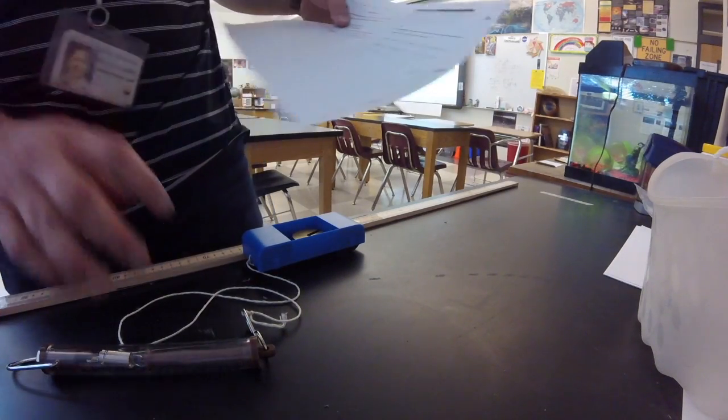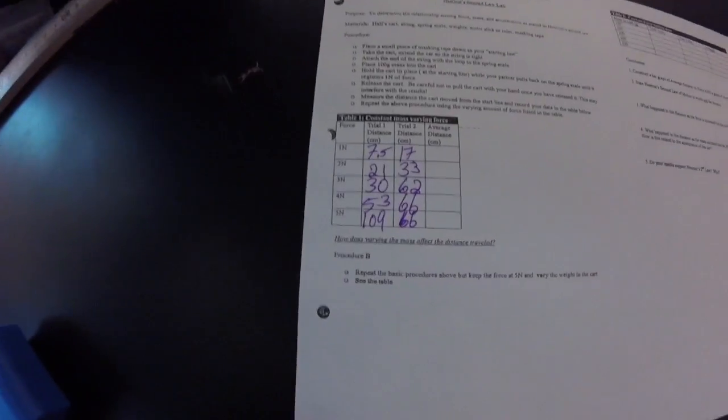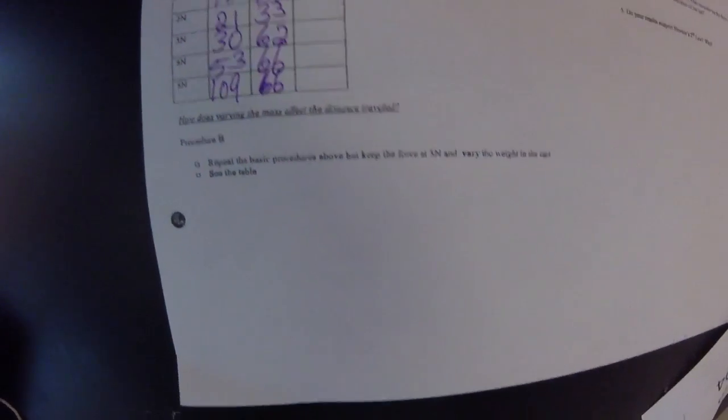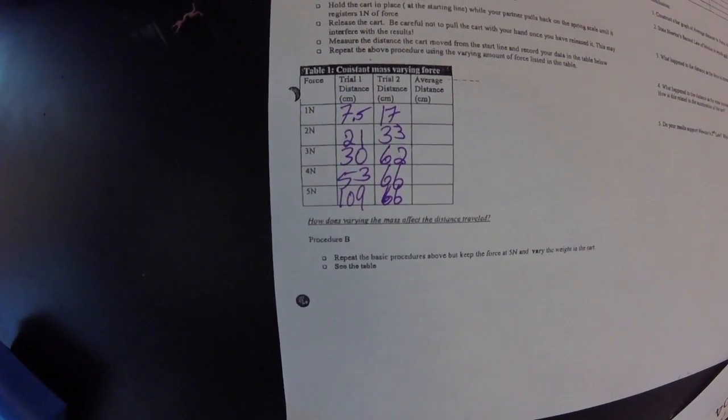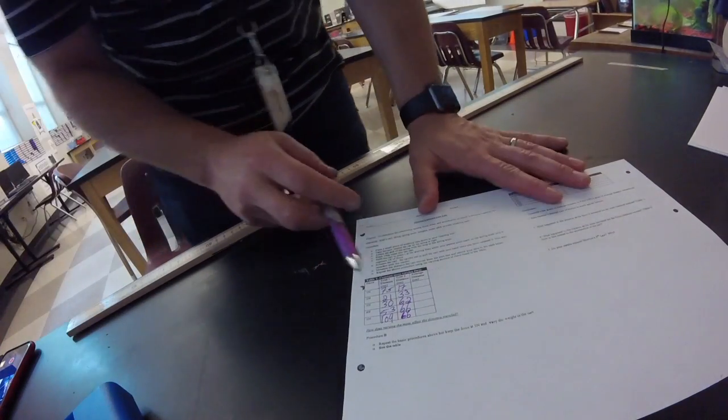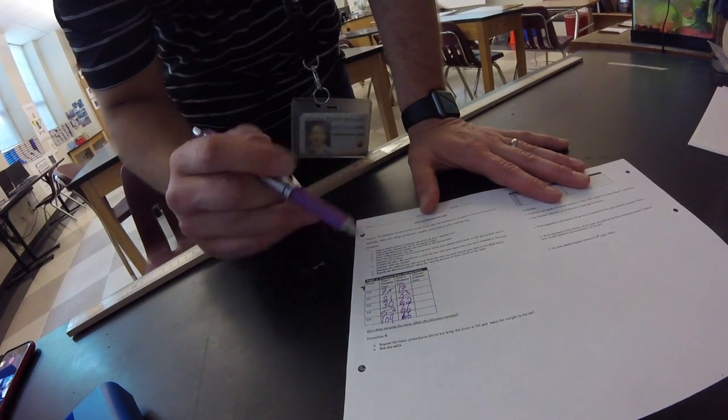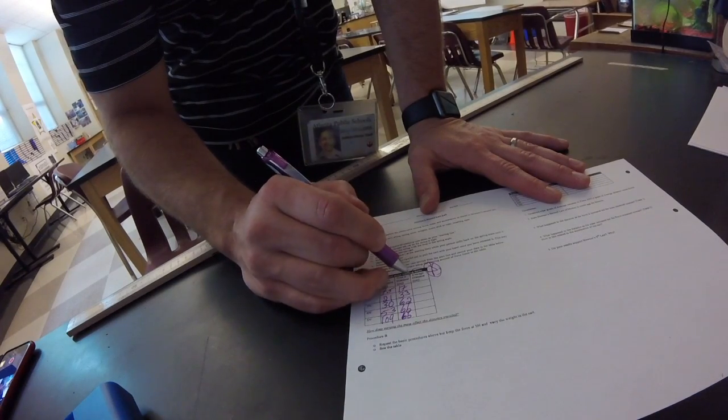I'm going to focus in on the data for table one. That's all my data points for table one. You will still need to calculate the average. Remember how that works: you're going to add up the two data points and divide that answer by two to get your averages. You'll only be graphing your average data.